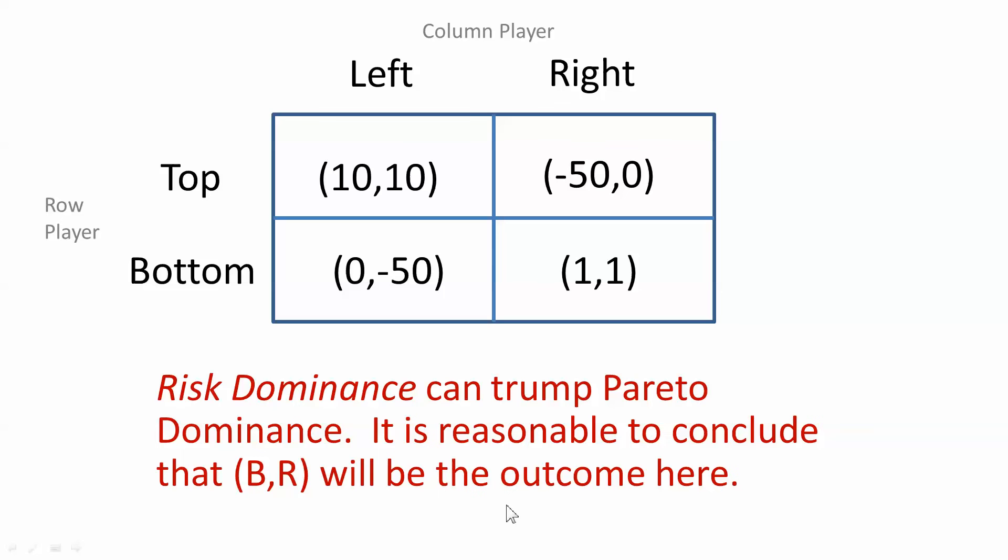It's been experimentally shown and theoretically argued that risk dominance can trump Pareto dominance. So in fact, in this game because of the risk, you might think that they'll arrive at the equilibrium bottom right, even though top left continues to be in equilibrium and Pareto dominates. Here you might think bottom right will prevail.